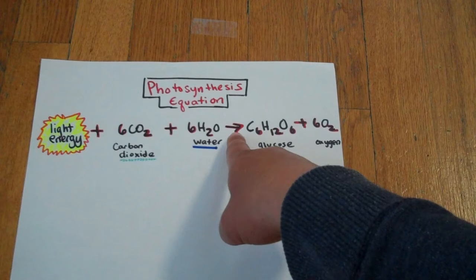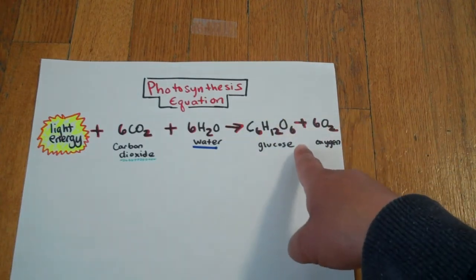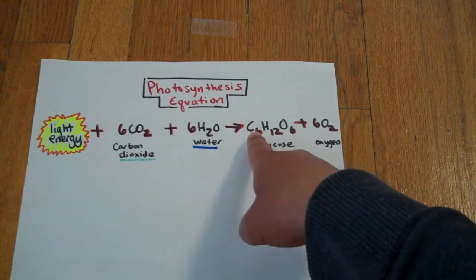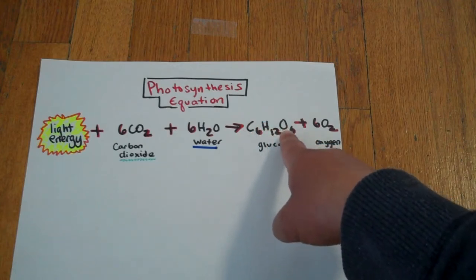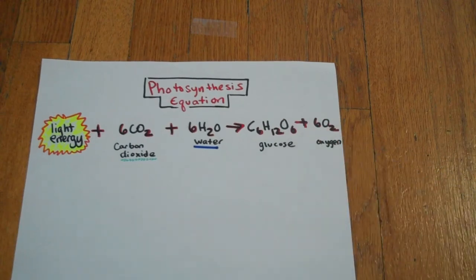This arrow in this equation means to yield, and it will produce glucose, C6H12O6, plus oxygen. And there's six molecules of oxygen.